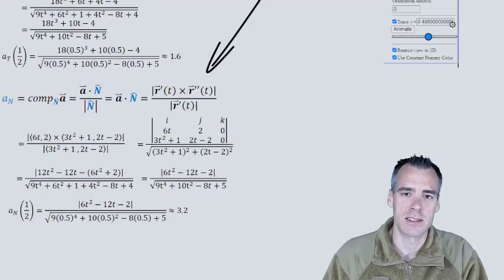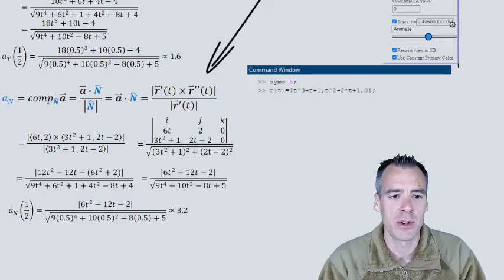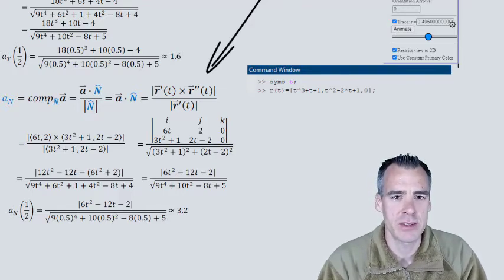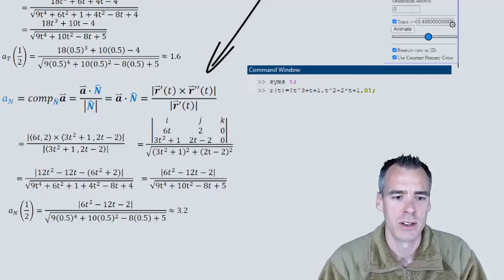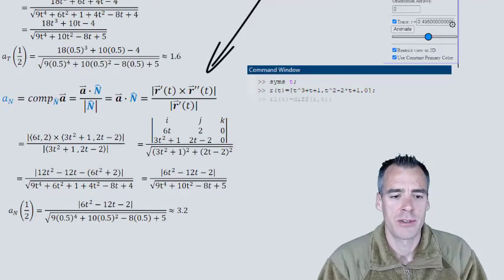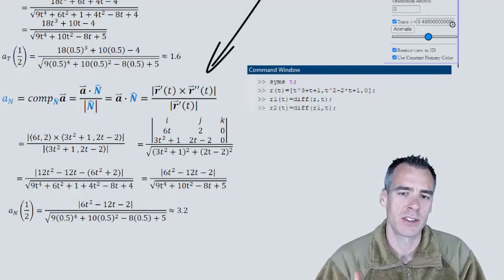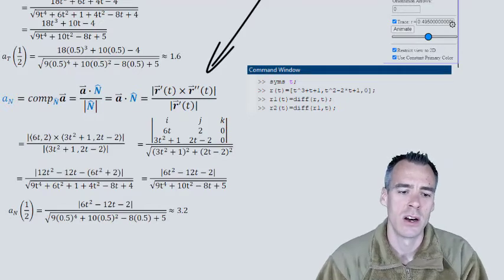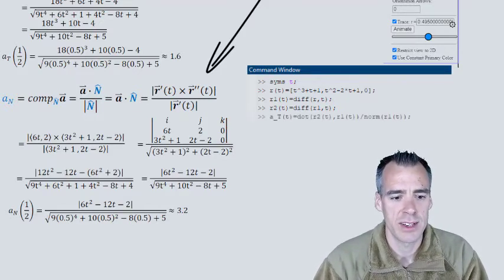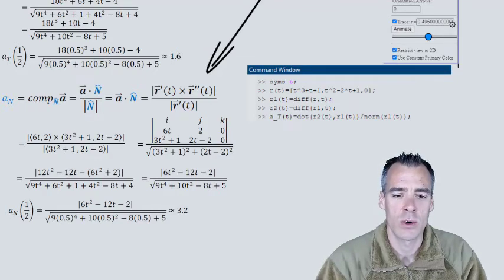So that's the hard way. For the easy way, let's go to MATLAB. First we define our variable t, then define that position function r that we were given. To be careful, we need three dimensions for the cross product, so we'll throw in zero for that z or k dimension. After defining r, we define the first derivative r1 using the derivative function DIFF. To find the second derivative, we take the derivative again of r1, calling it r2. Having defined those, we can plug them into our equation for the tangential component of acceleration using that dot of r2 and r1 divided by the norm of r1. Similarly, defining the normal component, we take the norm of cross of r1 and r2 divided by the norm of r1.